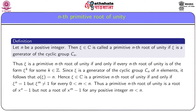Since the order of ξ is n, we have ξ^n = 1, but ξ^m ≠ 1 for any positive integer m less than n. Thus a complex number ξ is a primitive nth root of unity if and only if ξ^n = 1, but ξ^m ≠ 1 for 0 < m < n. Therefore, a primitive nth root of unity is a root of x^n − 1, but not a root of x^m − 1 for any positive integer m smaller than n.